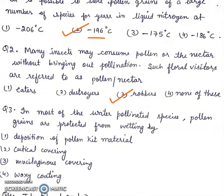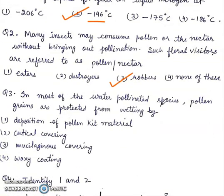Question 3. In most of the water pollinated species, pollen grains are protected from wetting by: 1. deposition of pollen kit material, 2. cuticle covering, 3. mucilaginous covering, 4. waxy coating. Right answer will be 3rd, mucilaginous covering.